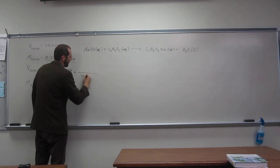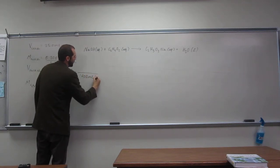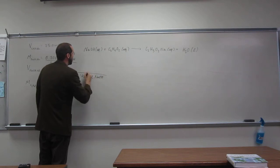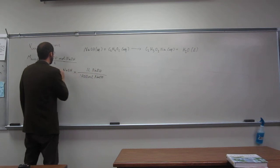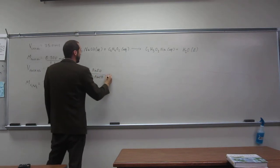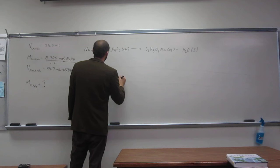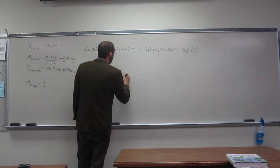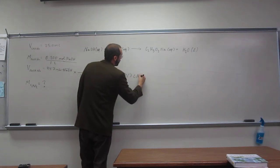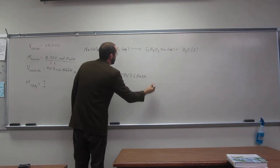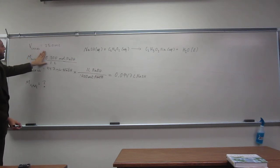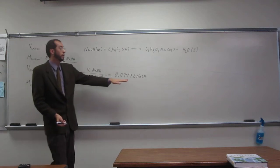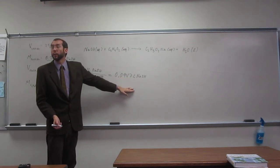So, how do we do that? 1,000 mLs NaOH is one liter NaOH. So, the molarity of NaOH we've got here. So, let's figure out how many moles are in this many liters of NaOH.